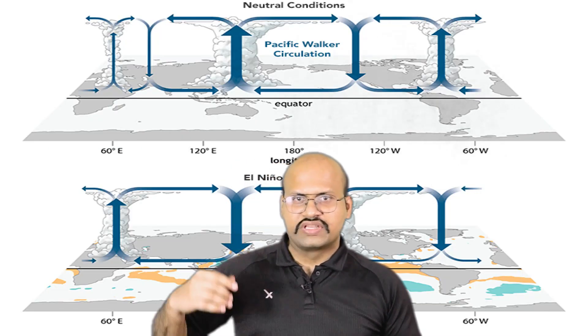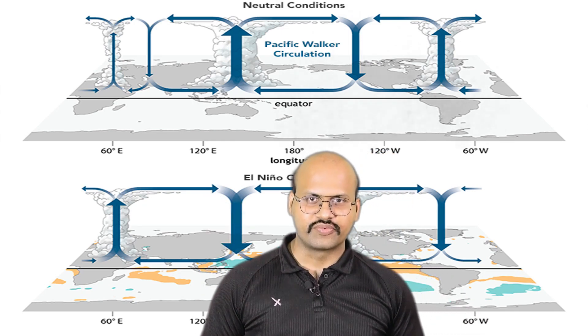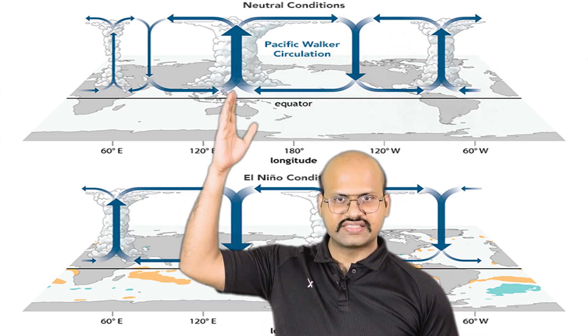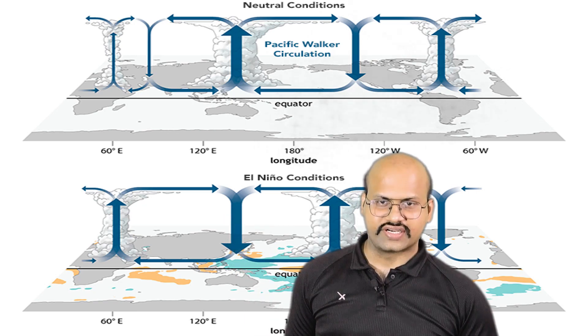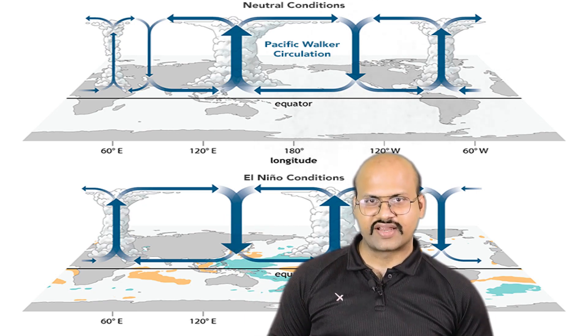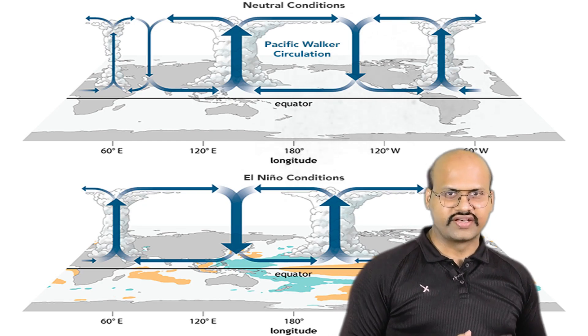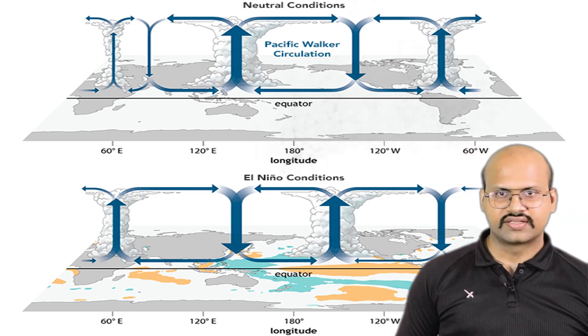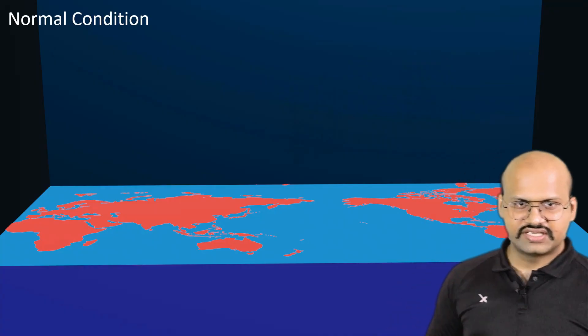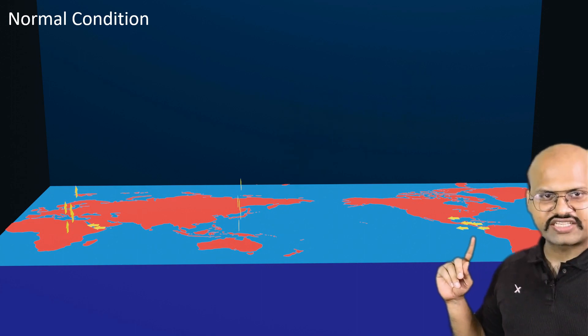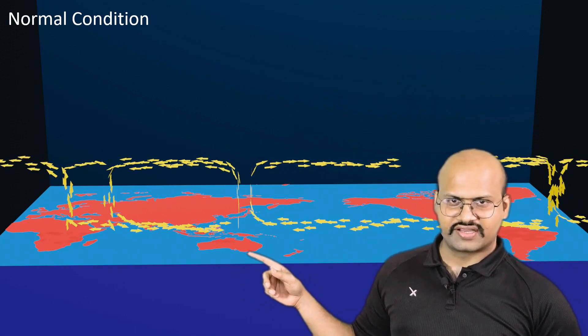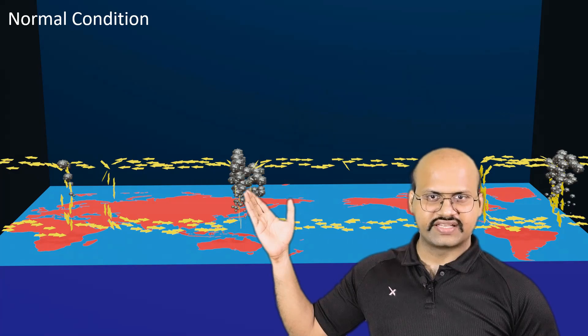This image indicates the air currents in our atmosphere during neutral conditions as well as during El Niño conditions. We will use this diagram to understand how El Niño affects weather across the earth. During neutral conditions, one air current starts from South America and goes towards Australia, rising over Australia and giving a lot of rain there, because the winds carry a lot of moisture as they move over the Pacific Ocean.